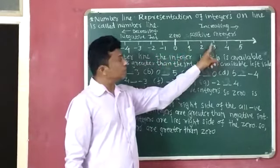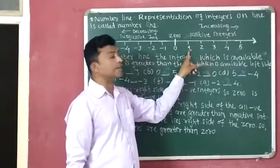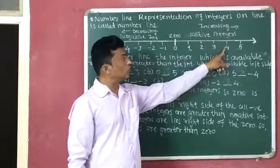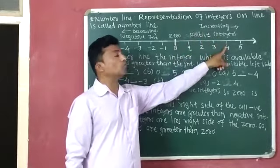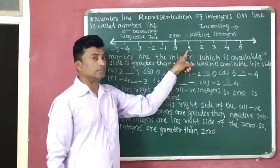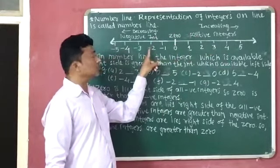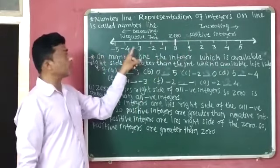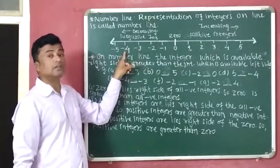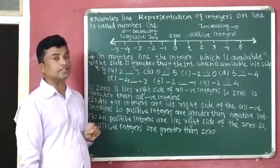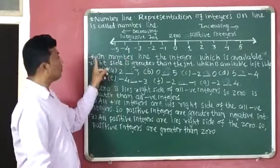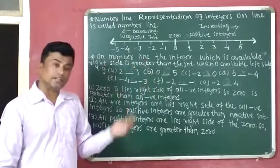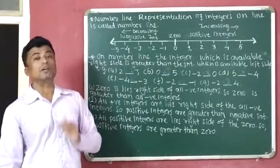For example: one and three — three is available on the right side of one, so three is greater. Zero and four — four is available on the right side of zero, so four is greater. Minus two and one — one is available on the right side of minus two, so one is greater. Minus four and minus three — minus three is available on the right side of minus four, so minus three is greater.